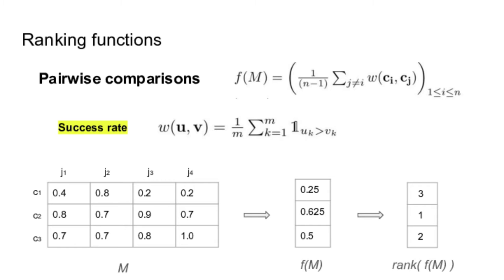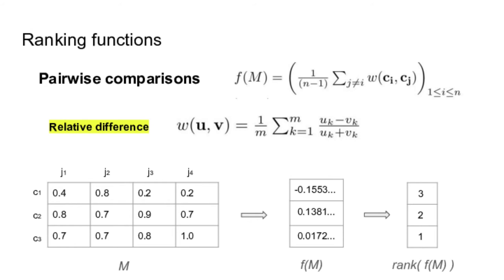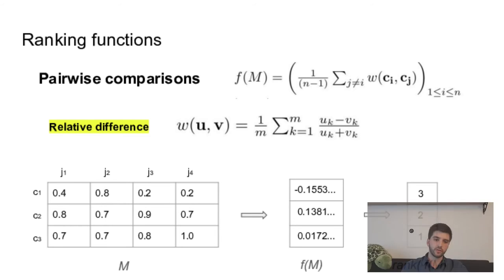And the last ranking function is the relative difference. So it's still a pairwise comparison between all pairs of candidates. But here, when you compare two candidates, you consider the judges one by one and compute a ratio using the following formula. So you take the difference and then you divide by the sum. In some sense, it avoids being sensitive to scales. And one thing interesting to note is that it's asymmetrical. So we'll talk more about it later.